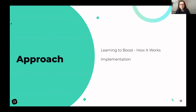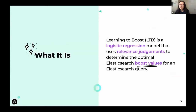Learning to Boost, or LTB, is a logistic regression model that uses relevance judgments to determine the optimal Elasticsearch boost values for an Elasticsearch query. Similar to Learning to Rank, both approaches aim to provide an optimal ranked list of search results. Specifically for Learning to Boost, the final output are the boost values that can be plugged into Elasticsearch, and the query in turn will return the optimal ranked list of results.